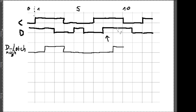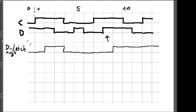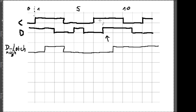Dann können wir noch weiter schauen. Da ist nochmal ein Takt mit 1 und 0. Hier hinten geht das Datensignal wieder auf 0, aber auch unser Taktsignal ist vorher auf 0 gewesen, sodass wir keine Änderungen mehr auslösen. Das heißt: für das D-Latch High Active schaut ihr, wo das Taktsignal auf 1 ist, und nur dann kann eine Änderung ausgelöst werden. Es gibt auch das Gegenteil: ein D-Latch Low Active, wo wir nur bei 0 ändern würden – das machen wir hier aber gerade nicht.